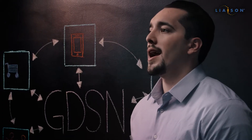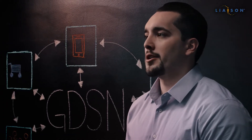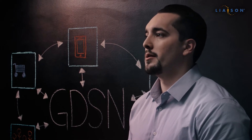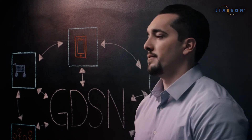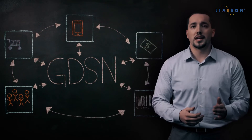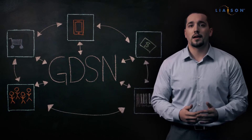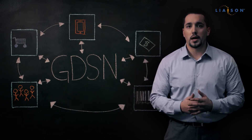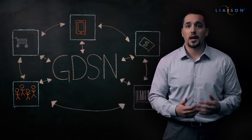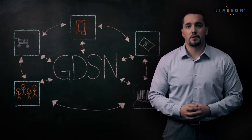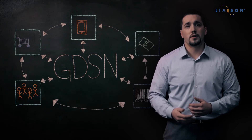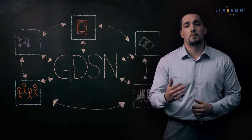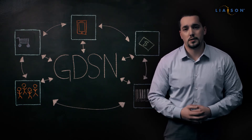You no longer have one supplier using 123 for an item code and another using ABC. GDSN dramatically reduces time spent manually entering and adjusting information, making it possible to focus your resources on core business initiatives.